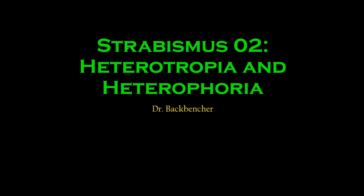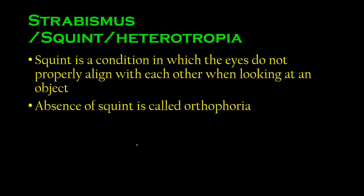Hey everyone, Dr. Backbencher here. Let's start off with the second portion of the chapter on strabismus, in which we will be studying two conditions: heterotropia and heterophoria. Before we get into this, let me tell you there will be a lot of new words here — new terms, difficult terms for very simple things. There are three or four words for one single term, so I'll try to use the simplest terms. If you're writing in an exam, I would advise you to use the more official terms.